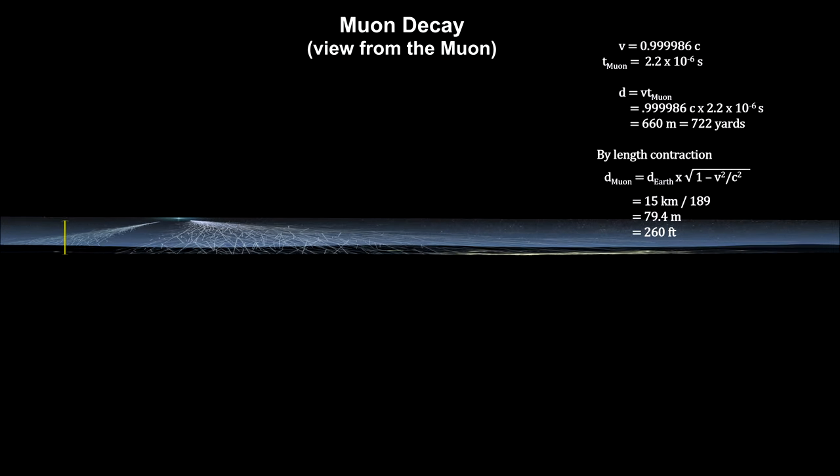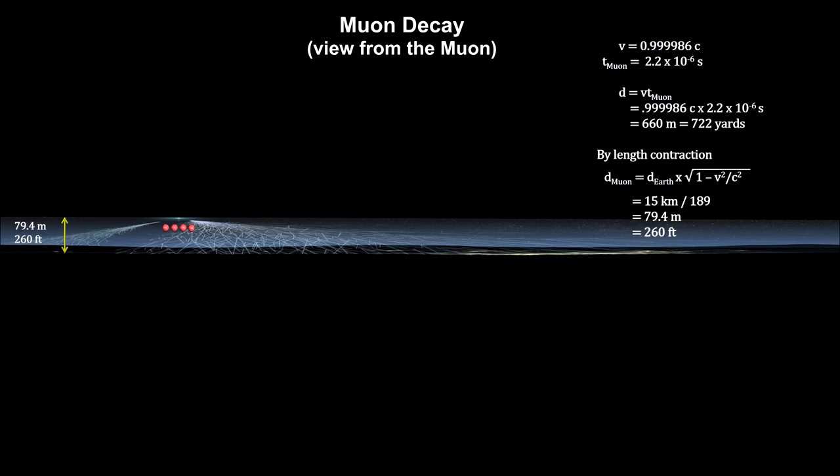The 15 kilometers of atmosphere is shrunk. For the muon, the distance to the surface is only 79.4 meters. Most of them will reach it in 2.2 microseconds.